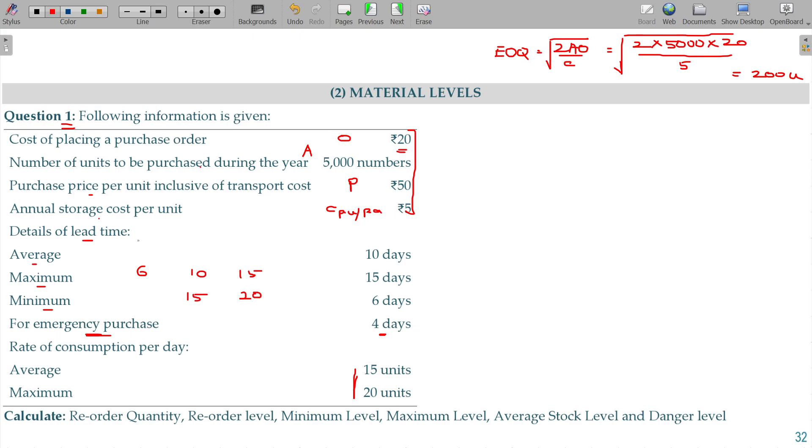So minimum? This is the minimum, this is the average, this is the maximum. This is the reorder period, this is the consumption. Consumption minimum? Yeah, 10. How do you get? Average is equivalent to